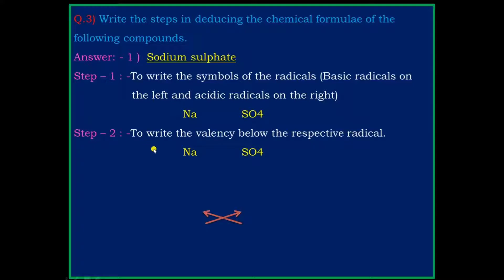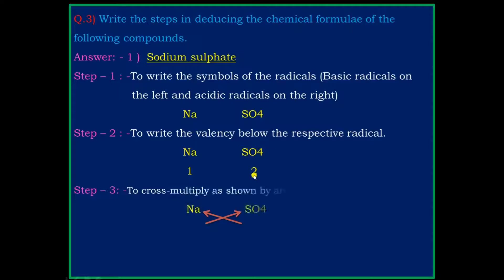Step 2: write the valency below the respective radicals. The valency of sodium is 1 and the valency of sulphate is 2. Step 3: cross multiply as shown by the arrow — cross multiply the valency with the radicals.